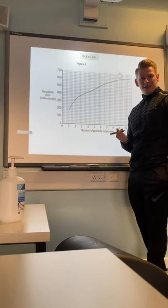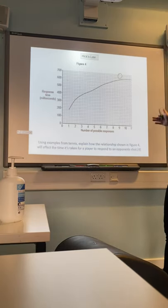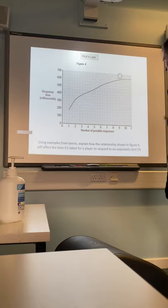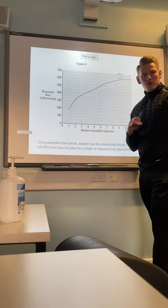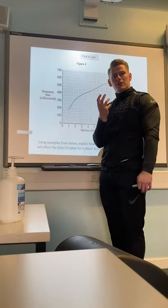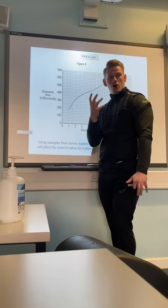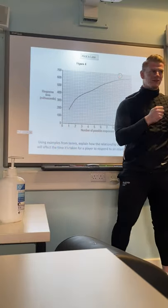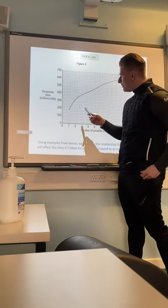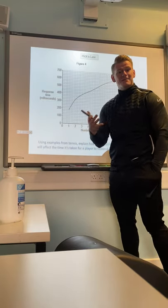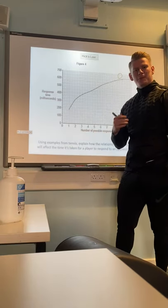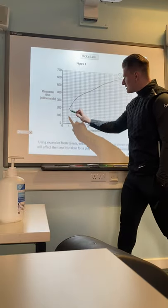From there we can apply this. A question might use something like this: using examples from tennis, explain how the relationship shown in figure four will affect the time taken for a player to respond to an opponent's shot. So for example, if we're playing a rally back and forth, you find it really easy and you're probably going to respond to your opponent's shot really quickly because you're just playing forehands and backhands. So we would say if the opposition plays an expected shot — and the example must be linked to tennis — if they play an expected shot such as a forehand, then our response time would be quicker.